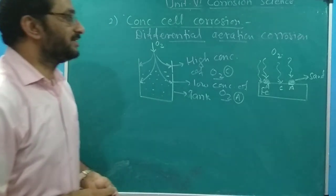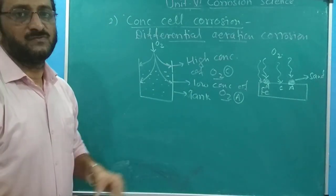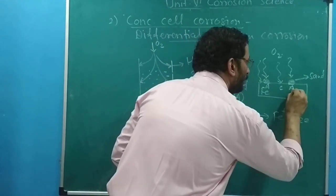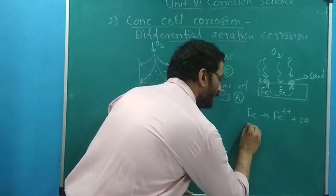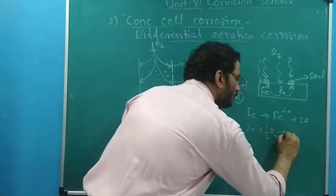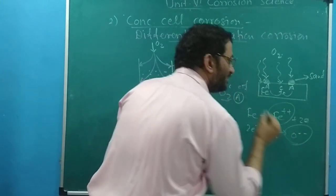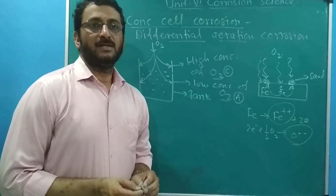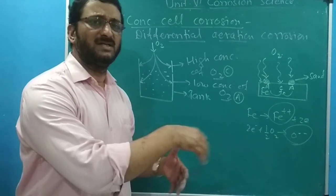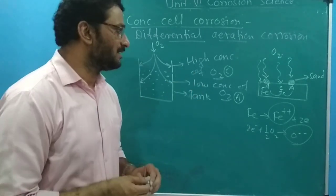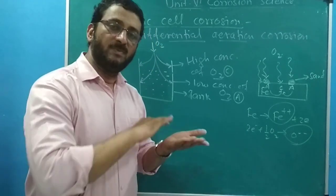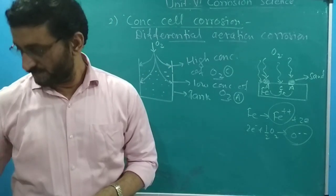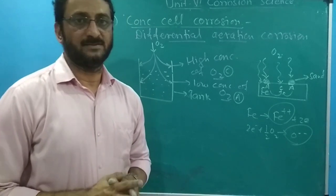The anode reaction is: Fe → Fe²⁺ + 2e⁻. Electrons travel from anode to cathode. The two electrons are taken by the medium; O₂ forms O²⁻ ions. These oppositely charged species diffuse towards each other and form ferrous oxide. On further oxidation it may form Fe₂O₃ and other products on the exposed part of the metal between the anode and cathode. This is the case of differential aeration corrosion, completing unit number six.